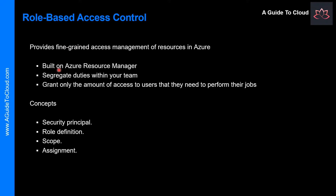Let's understand what you can do with RBAC. You can allow an application to access all resources in a resource group. You can allow one user to manage virtual machines in a subscription and another user to manage a virtual network. You can allow a DBA group to manage SQL databases in a subscription, or allow a user to manage all resources in a resource group such as virtual machines, websites, and subnets.